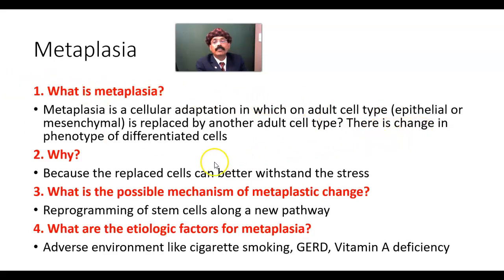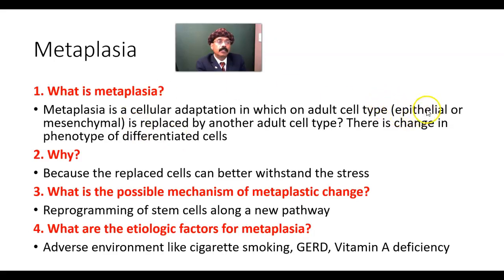There is a change in phenotype of the differentiated cell — the cell will be different. So the stratified squamous epithelium of the esophagus will be replaced by the columnar epithelium of the gastric mucosa in case of gastroesophageal reflux disorder. It may be epithelial metaplasia or it may be mesenchymal metaplasia.